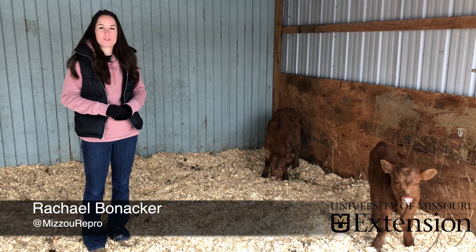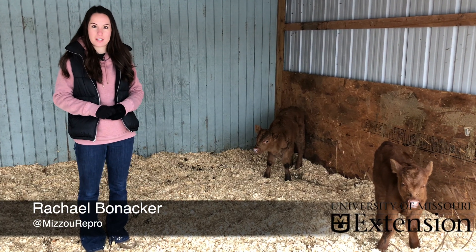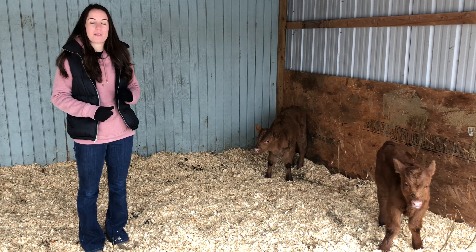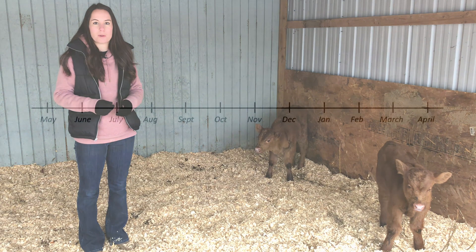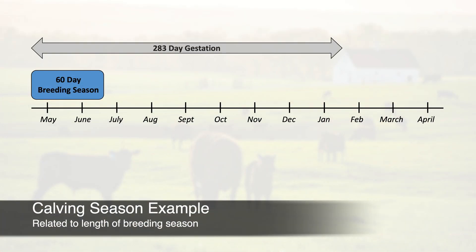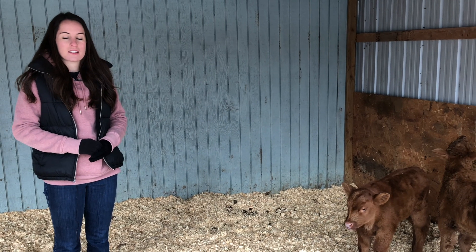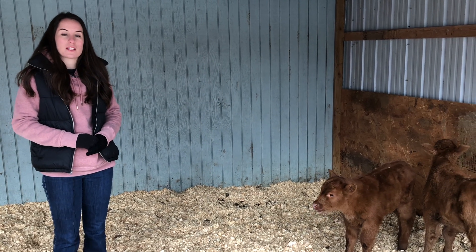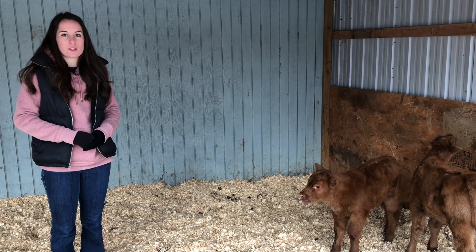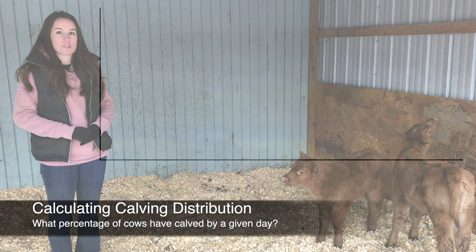In the beef industry, everyone is familiar with the concept of a calving season. Whether that be the fall or the spring, the calving season refers to the range of days for which cows are managed to calve — for example, 60 days. Having a defined calving season has several benefits, but today we're going to talk about a different concept: calving distribution.